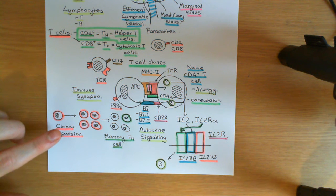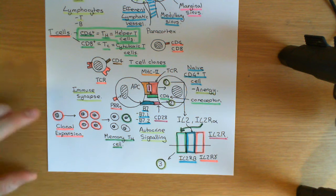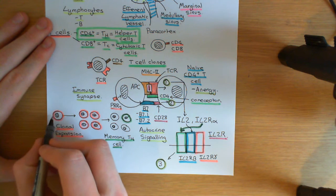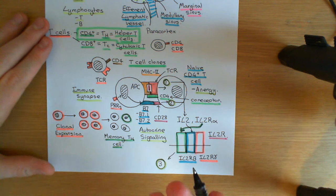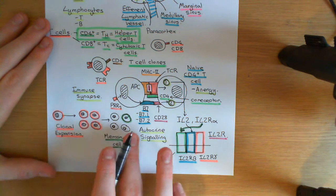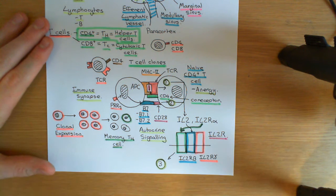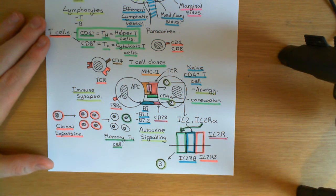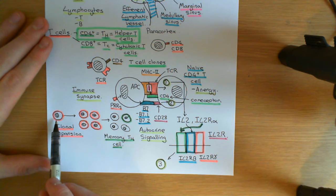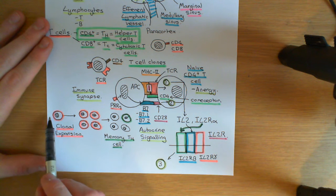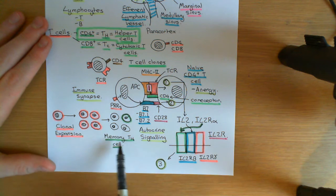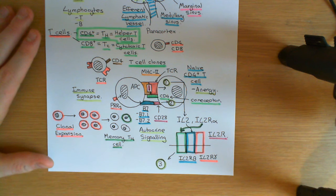What are memory helper T-cells for? These are to replace the naive CD4-positive T-cells. If all of the cells produced were to become effector helper T-cells, that would be a problem, because effector helper T-cells only live for a few weeks at maximum and then they're removed from the bloodstream. Naive CD4-positive T-cells have a much longer lifetime of up to years. If we change all these cells into effector helper T-cells, the complete clone of T-cells could completely die out after we've used them all up.